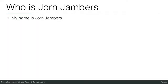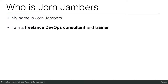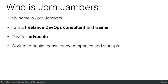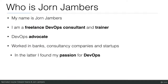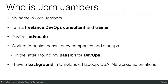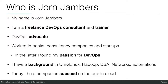My name is Joren Jambers. I'm a freelance DevOps consultant and trainer and a DevOps advocate. I've worked in banks, consultancy companies, and startups — in the latter I found my passion for DevOps. I have a background in Unix, Linux, Hadoop, database administration, networks, and automation. Today, I help companies succeed on the public cloud.